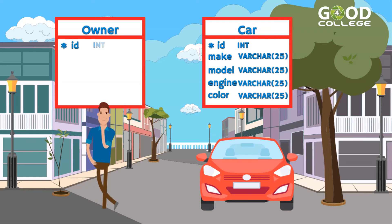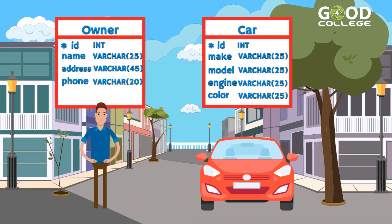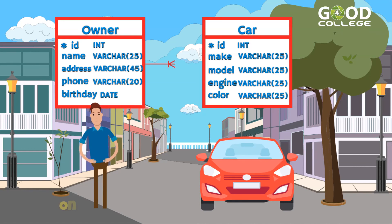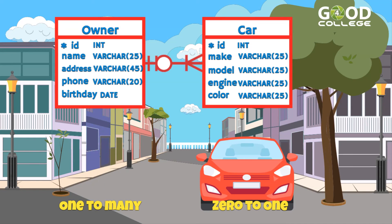Owner has: ID — Int; name — Varchar 25; address — Varchar 45; telephone — Varchar 20; birthday — Date. To complete the diagram, we add the relationship: an owner can have one or many cars, and a car belongs to an owner, or maybe not.